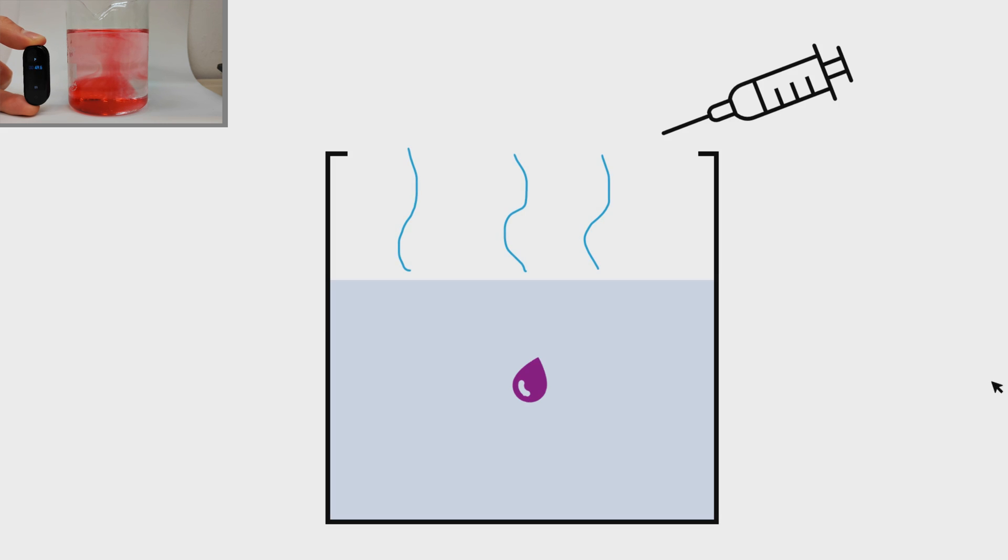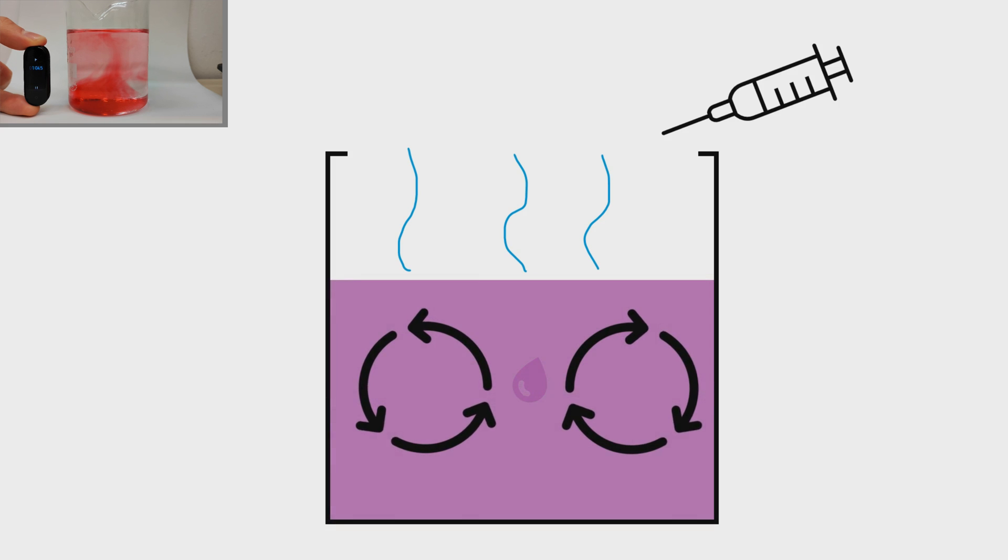Well, what happens is that water is evaporating from the top, which cools them. So, we have a region of cool water at the top and warm water at the bottom. Since cold water is slightly denser, it tends to sink. This causes swirls and currents inside a beaker, which mixes the food coloring very fast.